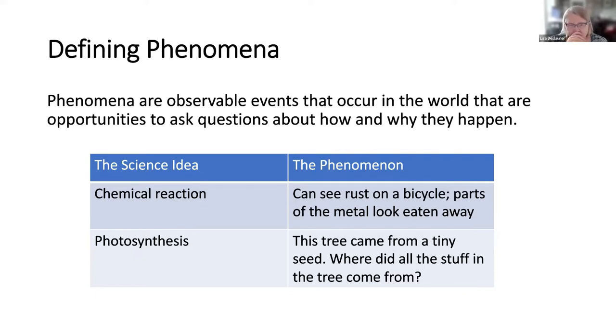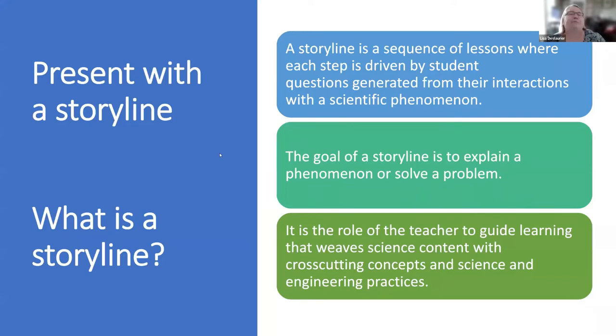For photosynthesis, the classic phenomenon is starting with an acorn and you have a big picture of an oak tree. Where did all the stuff come from, all the matter? Lots of misconceptions about that. And that's always a good phenomenon to use.